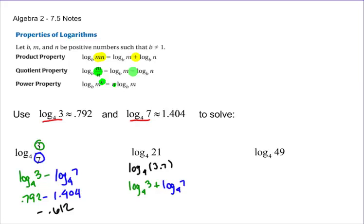That's going to give me the 0.792 plus 1.404. You can either add that up or punch it into your calculator, but it should get you to 2.196.